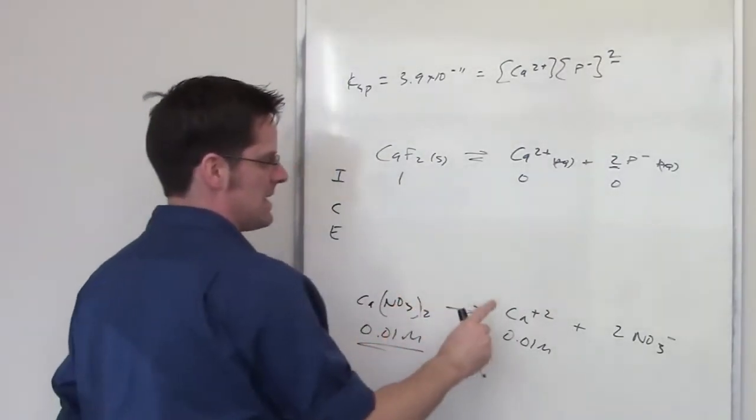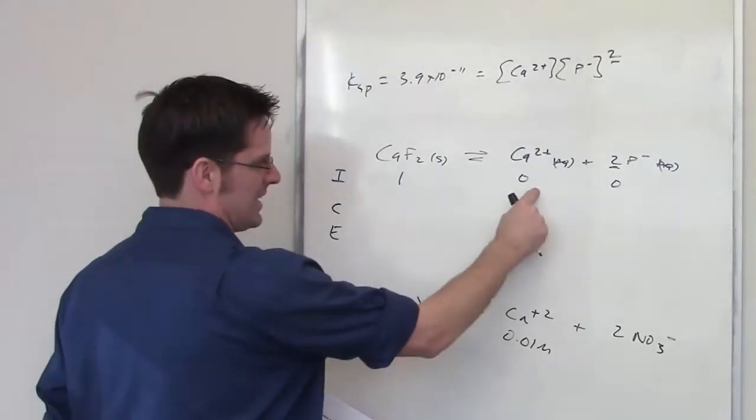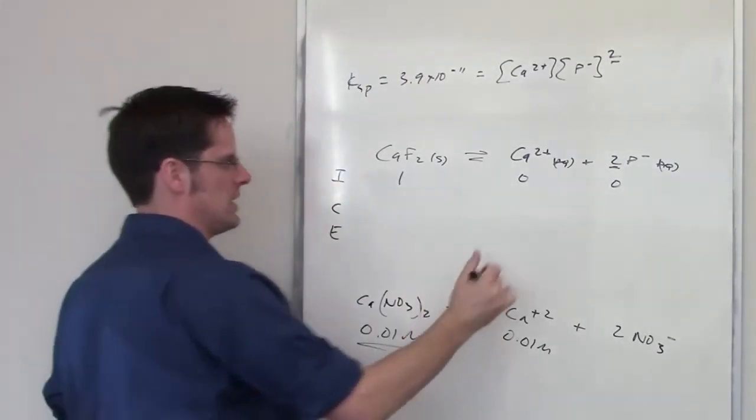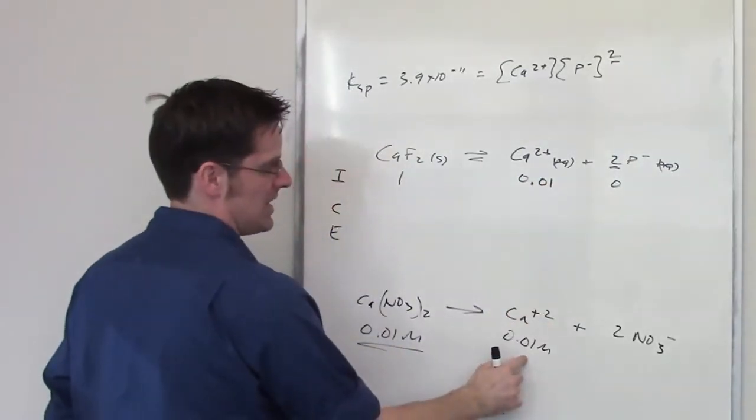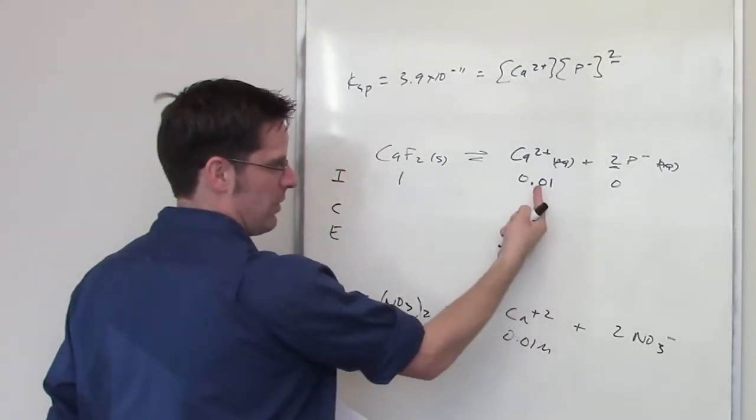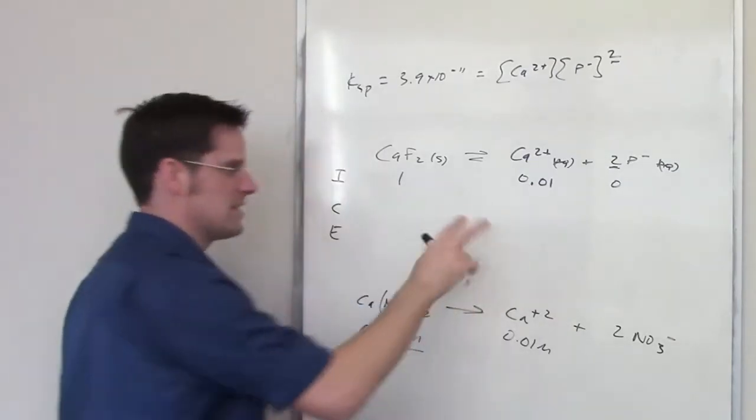However, that is not going to be the case here because I have a separate source of calcium 2 plus that instantly dissociates. So my initial concentration of calcium 2 plus is the same. This is going to feed back up here into this reaction. So that is the difference here.